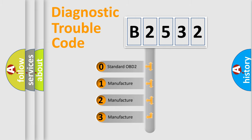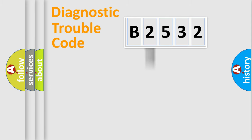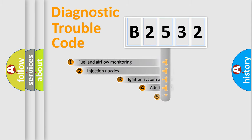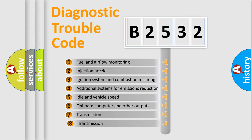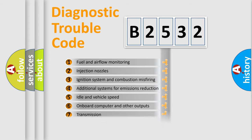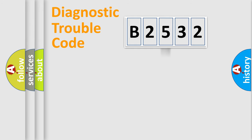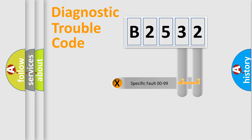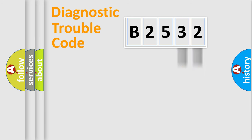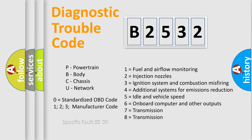If the second character is expressed as zero, it is a standardized error. In the case of numbers 1, 2, or 3, it is a manufacturer-specific expression of the car's error. The third character specifies a subset of errors. The distribution shown is valid only for the standardized DTC code, and only the last two characters define the specific fault of the group. This division is valid only if the second character code is expressed by the number zero.